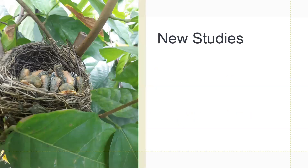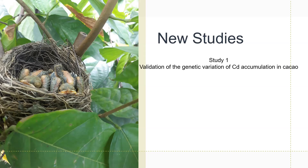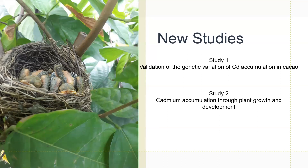This led us to new studies. One important study was to validate that the differences in cadmium accumulation between varieties was due to genetic variation. The second study was to assess cadmium accumulation through plant growth and development. Today I'll be presenting mostly on the first study — differences in cadmium accumulation between varieties, uptake and partitioning — and the second study focusing on factors that influence cotyledon cadmium accumulation and differences between varieties at the gene bank. At the end, I'll identify main regulatory points to reduce cadmium accumulation in the bean at the farm level.